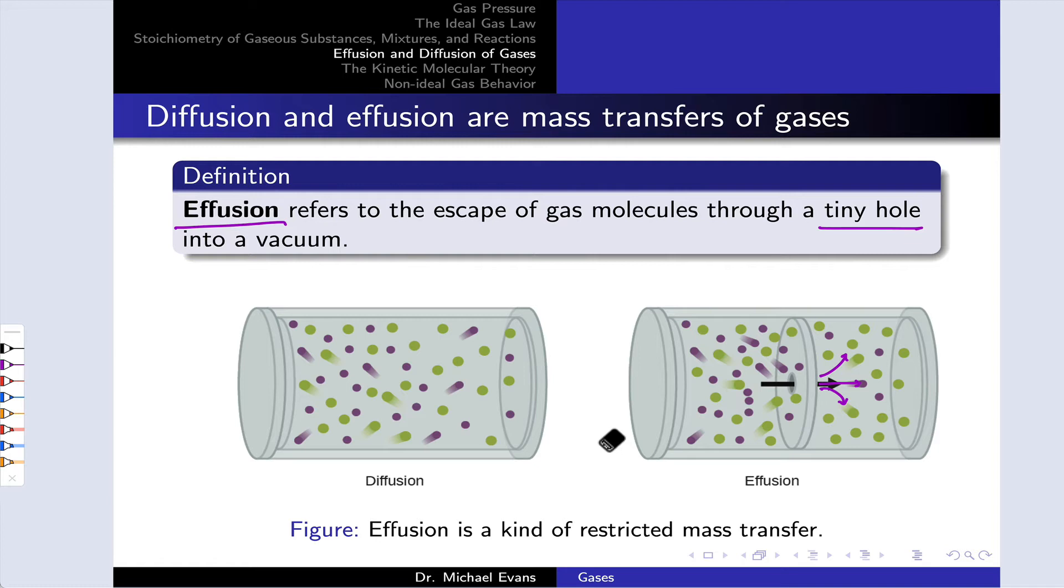You can think about it like poking a tiny hole in a balloon. As gas particles move from the inside to the outside of the balloon, they do so via effusion. So here, for example, we can see the purple molecules effusing through the tiny hole.